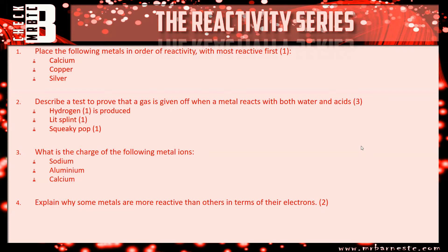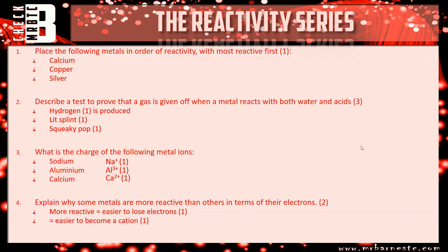What is the charge of the following metal ions? Sodium, group one: Na+. Aluminium, group three: 3+. And calcium: 2+, because it's in group two. And finally, explain why some metals are more reactive than others: more reactive because it's easier to lose electrons, easier to become a cation, and therefore the easier it is to lose an electron, the more reactive the metal.